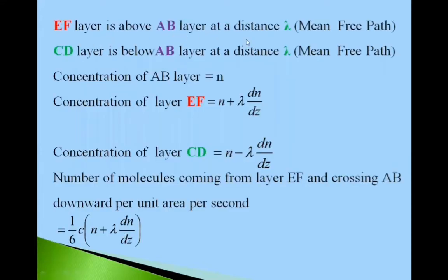EF layer is above AB layer at distance lambda. CD layer is below AB at distance lambda. Lambda is mean free path. Concentration of AB layer is N. Concentration of EF layer is N plus lambda dN by dz. Concentration of layer CD is N minus lambda dN by dz.